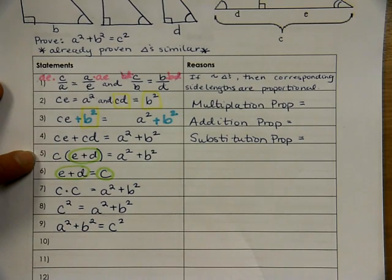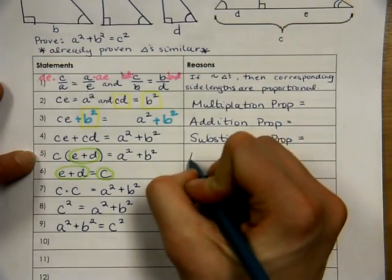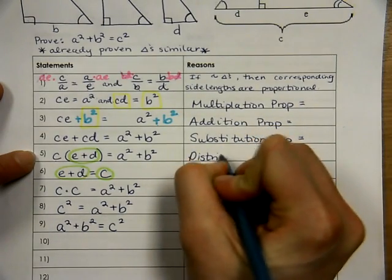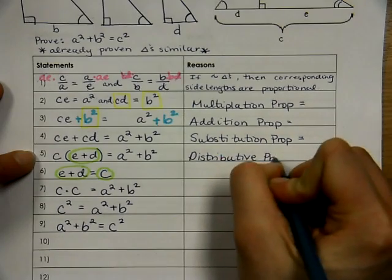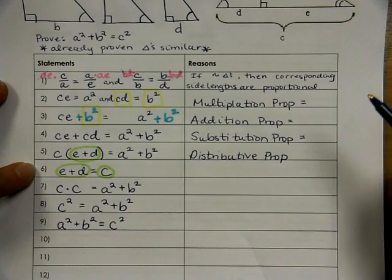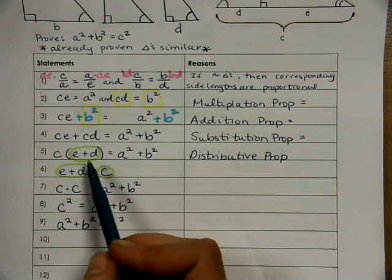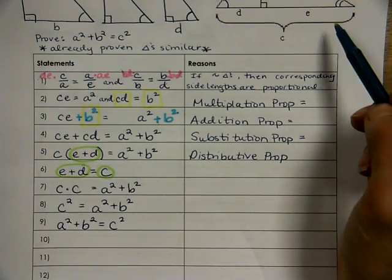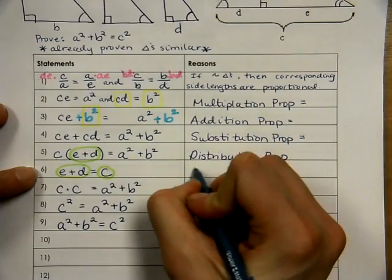And then, once we saw that, we factored out the C. And really, we just know that is the reverse of the distributive property. Well, then we saw that we knew that E plus D, if we look back in our picture, was equal to C using segment addition postulate.